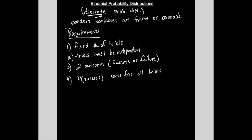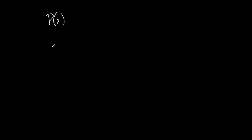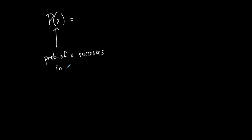If these requirements are met, then we have a binomial probability distribution and we can calculate the probability of x outcomes in n trials. This notation represents the probability of x successes in n trials.